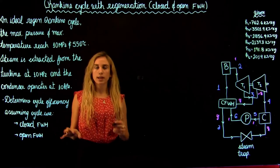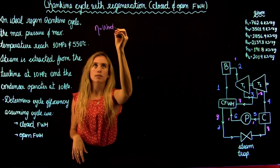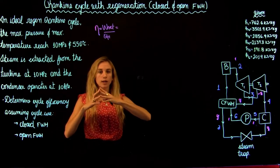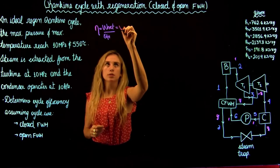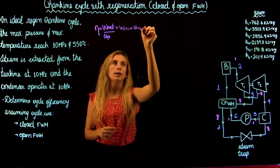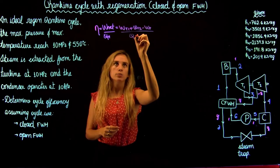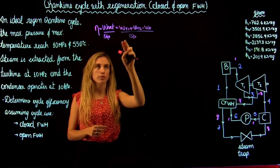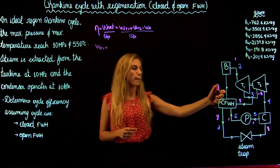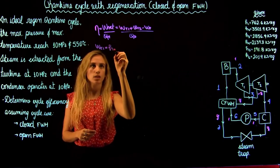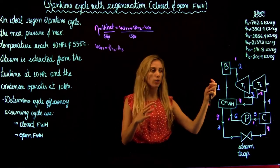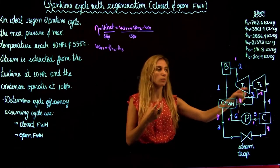Now let's write the equation for the cycle efficiency, which is equal to the net work over the heat input. The net work is the work output produced minus the work input — so it's the work done by the high pressure turbine plus the work done by the low pressure turbine minus the work of the pump, all over the heat input in the boiler. The work of the high pressure turbine is equal to H2 minus H3. A turbine produces energy, so the energy at three is going to be lower than the energy at two.